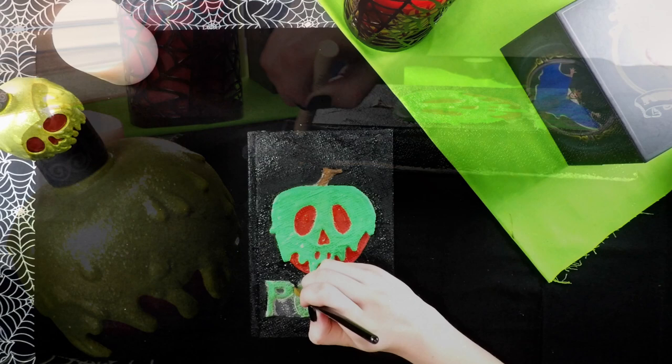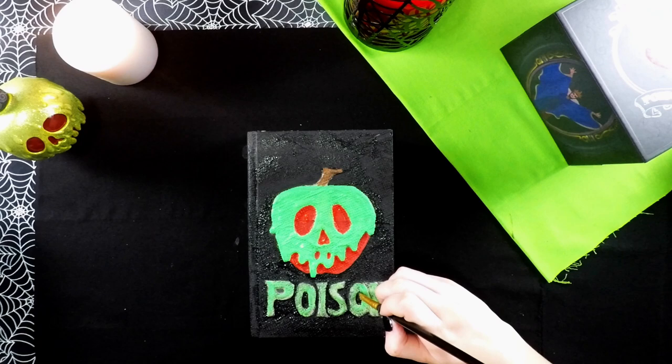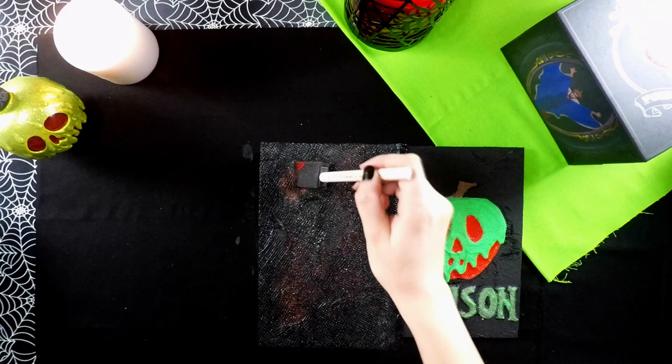After painting the background black, I took a mixture of red and brown paint and applied that on top of the black just to make it look a little bit more aged and creepy.